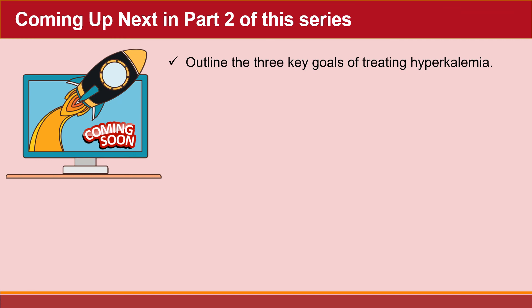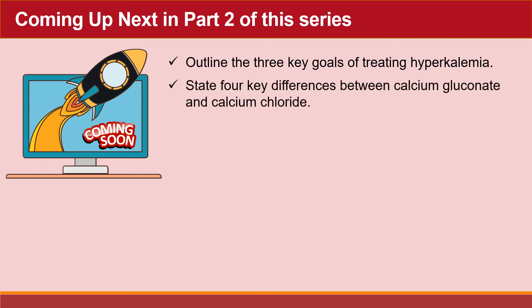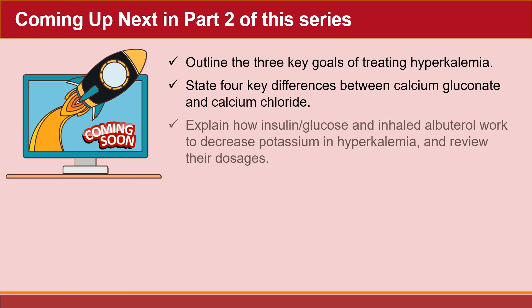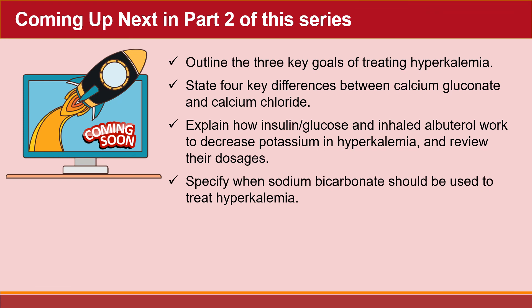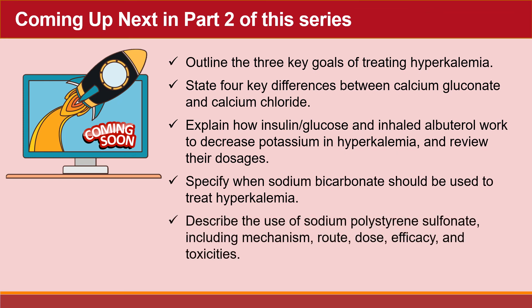Coming up next in Part 2 of this series, we will outline the three key goals of treating hyperkalemia. We'll state four key differences between calcium gluconate and calcium chloride, explain how insulin, glucose, and inhaled albuterol work to decrease potassium in hyperkalemia and review their dosages. We'll specify when sodium bicarbonate should be used, and describe the use of sodium polystyrene sulfonate, including mechanism, route, dose, efficacy, and toxicities. So stay tuned!